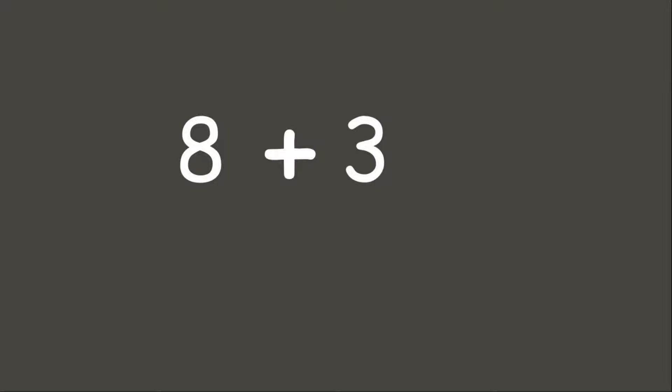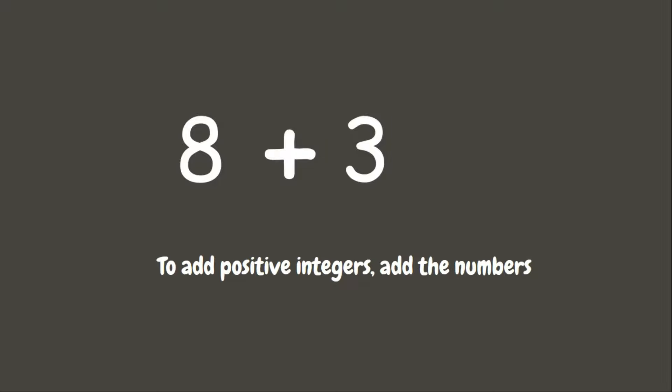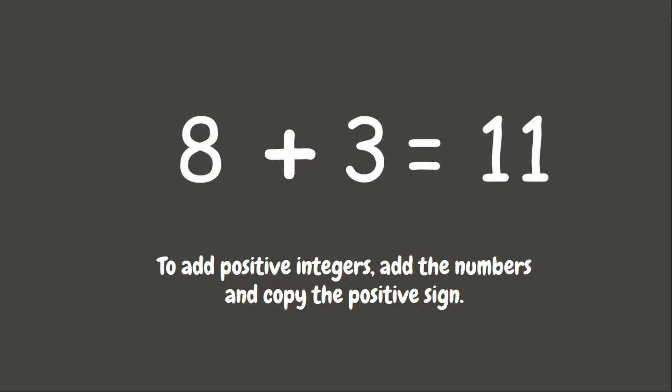Now let us try positive 8 plus positive 3 without using number lines and counters. As we can see, they are both positive numbers. Remember, when we are adding positive integers, we simply add the numbers and copy the positive sign. Therefore, 8 plus 3 is 11, and since it's positive, we may or may not write the positive sign. Great job!